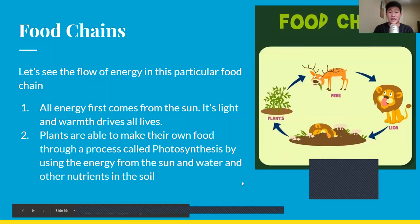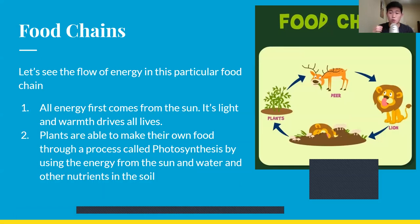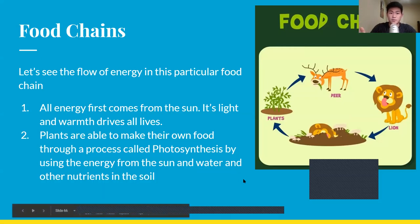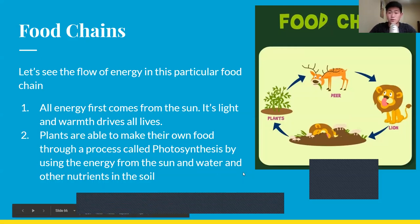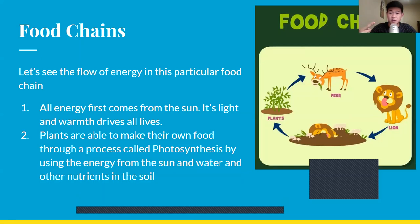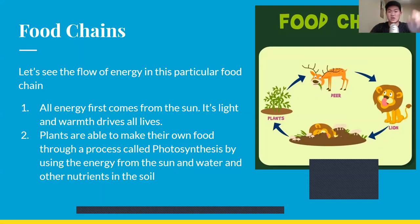Let's see the flow of energy in this food chain. Food chains are all about the flow of energy. All energy on Earth comes first from the sun — it's the sun's light and warmth that drives all life. Plants are then able to make their own food from sunlight through a process called photosynthesis, using energy from the sun and water and other nutrients from the soil.